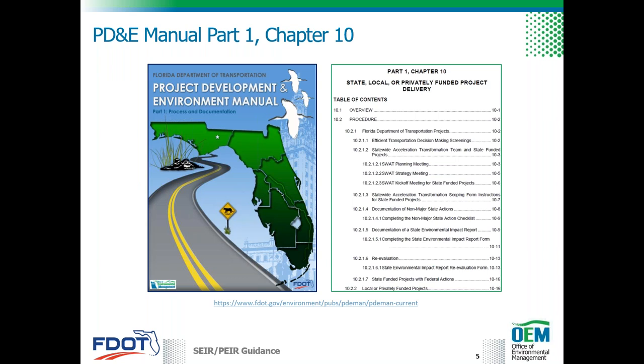Part 1, Chapter 10 of FDOT's PD&E manual provides detailed guidance on the state, local, or privately funded project delivery process that we're going to be discussing today. This chapter is a valuable resource to accompany the information provided in this webinar. A link to the manual is provided, and links to all training materials mentioned during this webinar will be provided at the end.